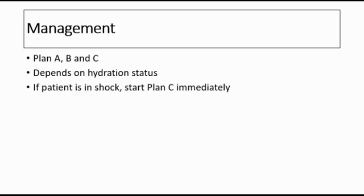Management is divided into Plan A, Plan B, and Plan C, depending on the hydration status. Plan A is for mild dehydration, Plan B is for moderate dehydration, and Plan C is given immediately if the patient is in shock, usually seen in those with severe dehydration.